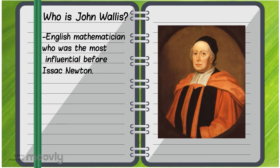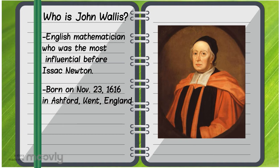John Wallis was an English mathematician who was the most influential before Isaac Newton. He was born on November 23rd, 1616 in Ashford, Kent, England.